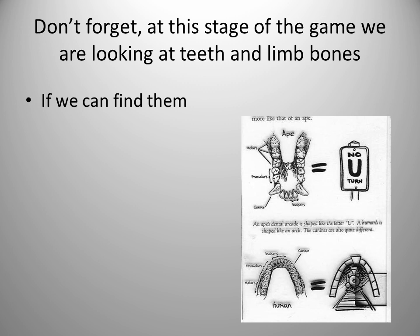At this stage of the game, we're primarily looking at teeth and limb bones. What you see in this diagram is the dental arcade of an ape on top and the dental arcade of a human on the bottom. The ape's is shaped more like a U — even more square-like. You have a diastema, which is a space between the canines and the incisors, and of course much more pronounced canines. There's also a difference in the size of molars. With apes, you have five cusps; humans, you have four.